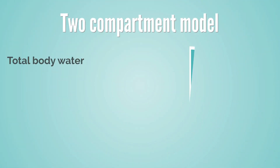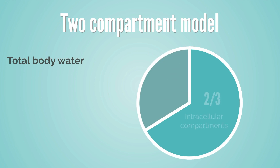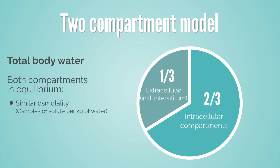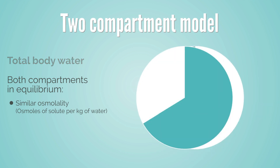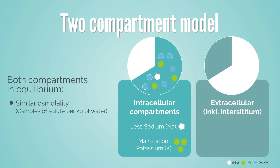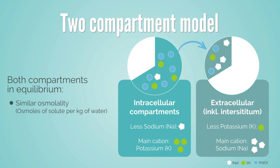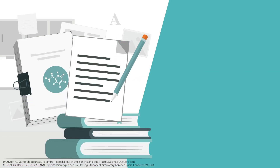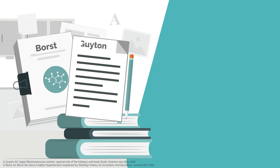For a long time, the concept of sodium was based on the two-compartment model, which assumes the total body water to be divided over the intracellular and extracellular compartments with a similar osmolality. While potassium represents the main cation in the intracellular compartment, the opposite is true for the extracellular compartment. Here, sodium is the main cation and driver for preserving the effective circulating volume. Only a minor portion of intracellular water will shift towards the extracellular space to aid the re-establishment of osmolality.